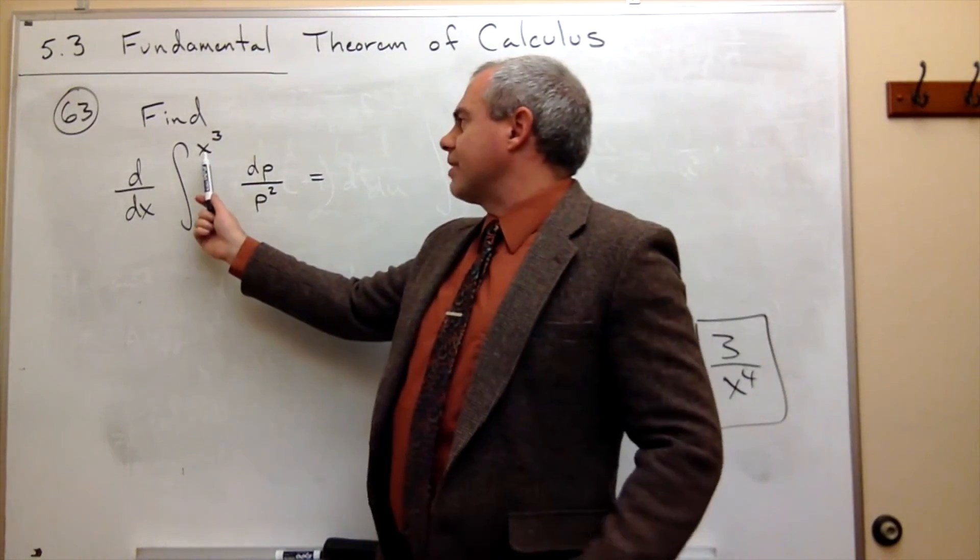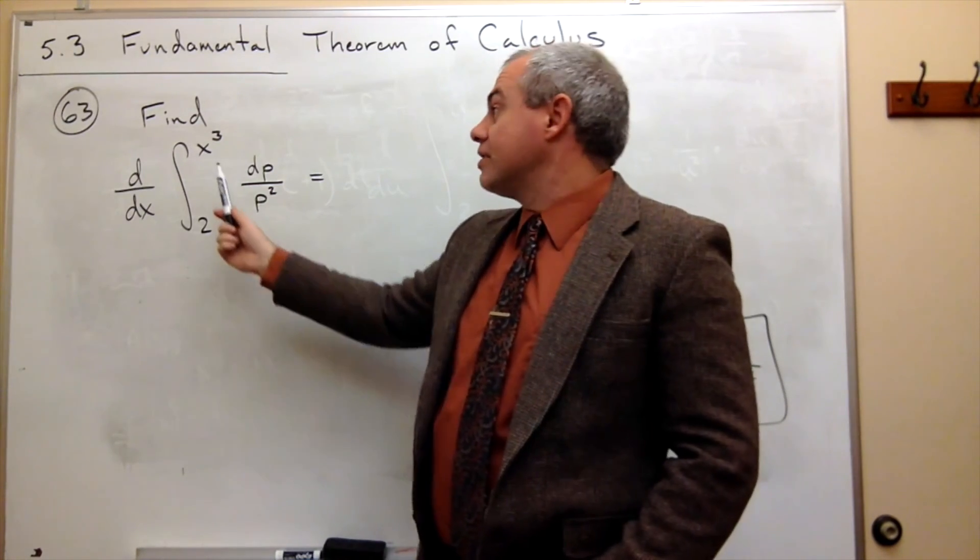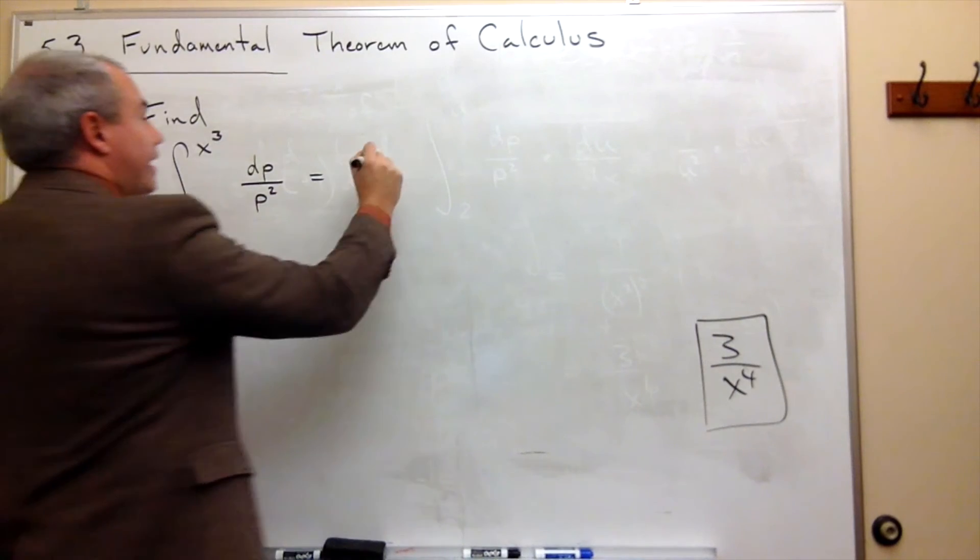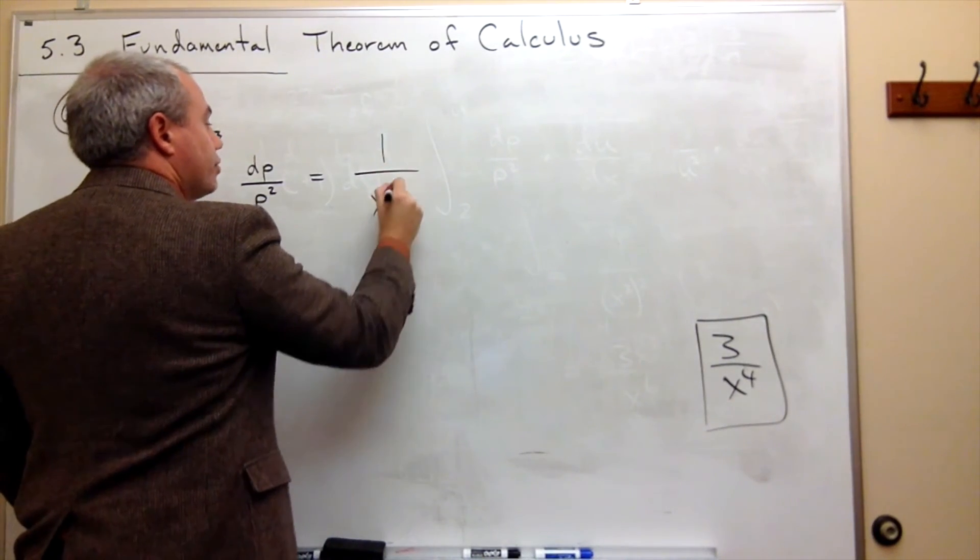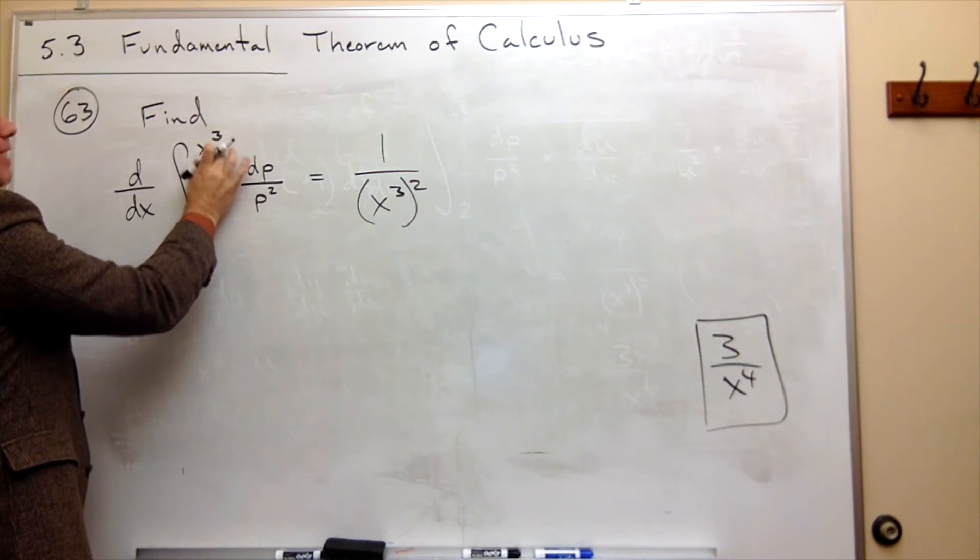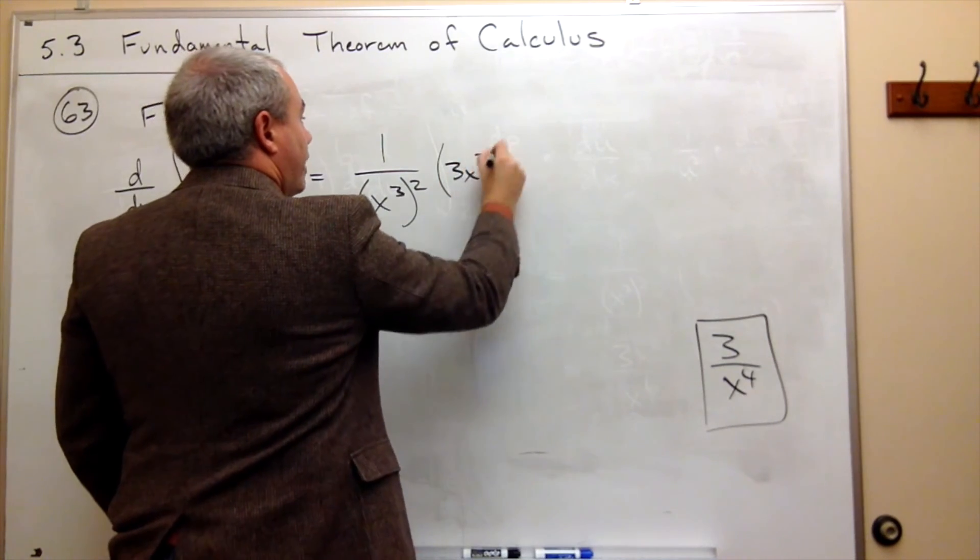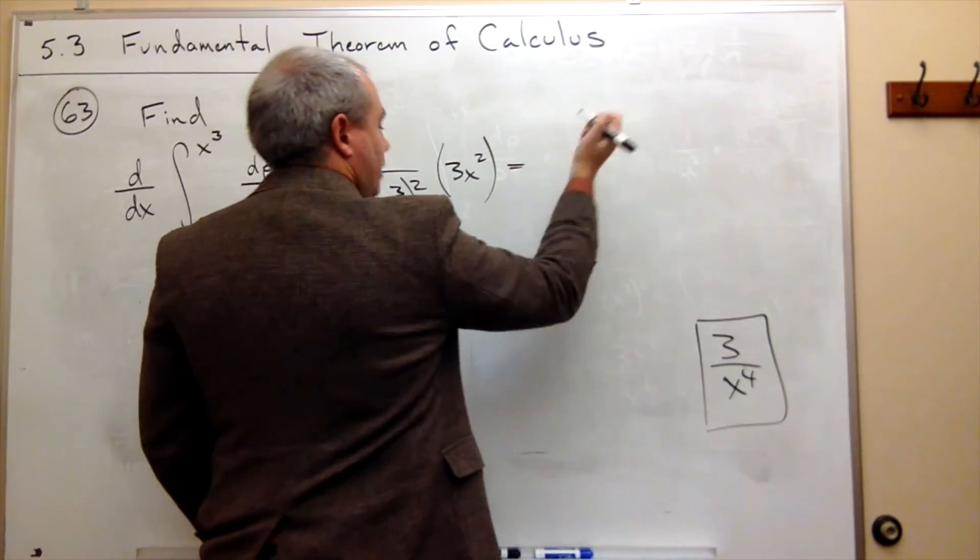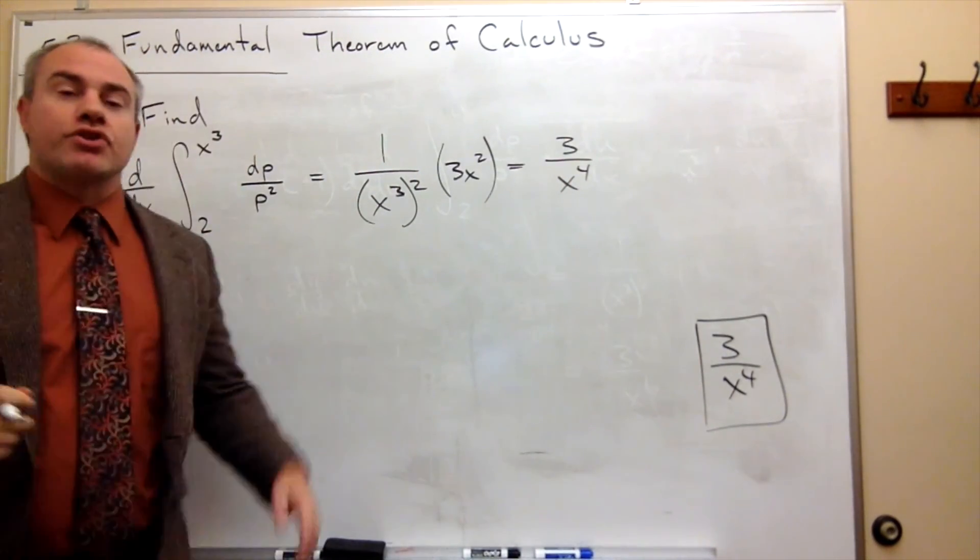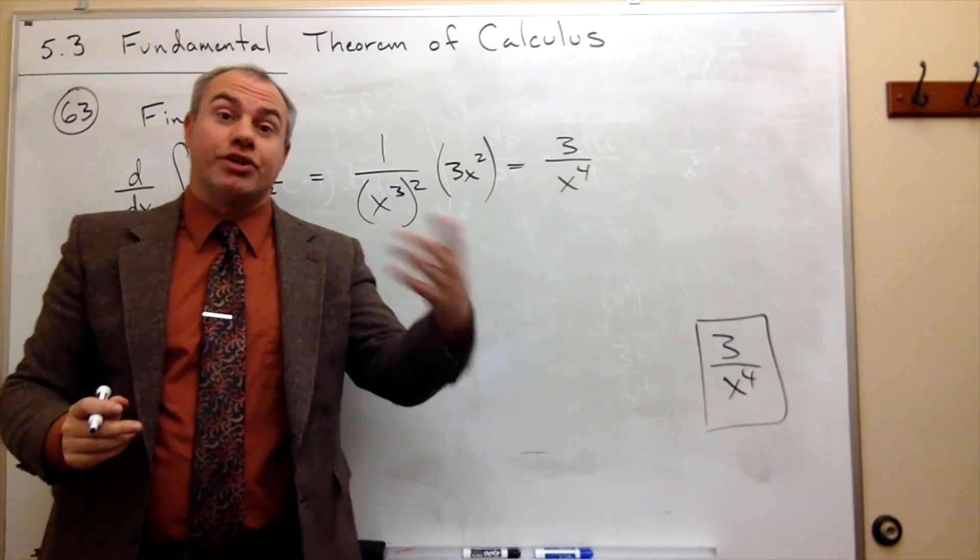So we know now that the answer is 3 over x to the 4th, but let me erase everything. I'm going to leave this answer just to remind us what the answer is. And so now I'm going to use the fundamental theorem in a slightly quicker way. What I'm going to do is I'm going to say, x cubed is what I want to plug in here. So I plug in x cubed for p, and I get 1 over x cubed squared. And then I say, now just multiply by the derivative of x cubed, which is 3x squared. And what do I get? Well, 3 over x to the 4th.